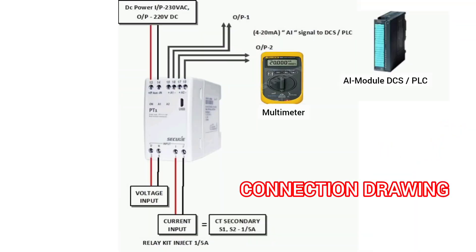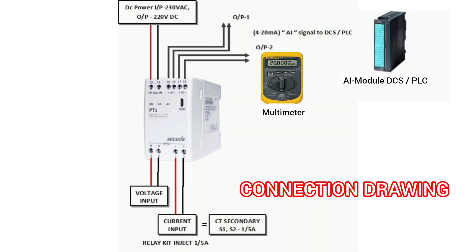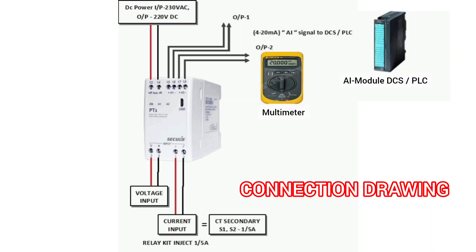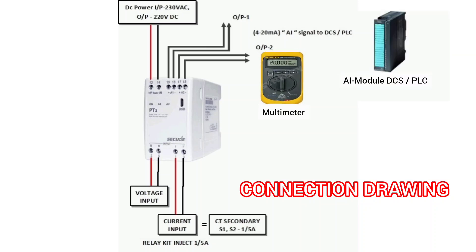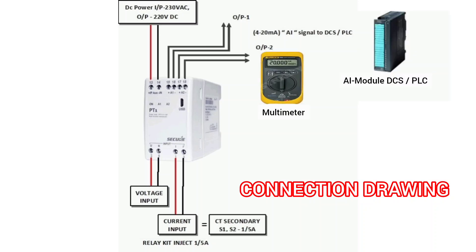Now I will show you the connection wiring of current transverser. Inputs 1 and 3 are for current; 2 and 5 are for voltage. This current input of 1 and 3 will convert into output signals. For this current transverser, we have two outputs: output 1 is terminals 15-16, output 2 is terminals 17-18. Both outputs are 4 to 20 milliamp analog signals.